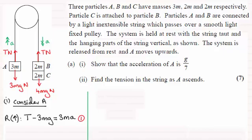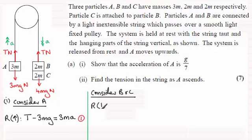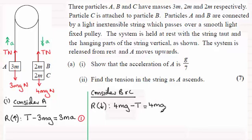Now we look at these two particles. Consider B and C. Because they're moving downwards, we apply Newton's equation of motion resolving downwards: force equals mass times acceleration. The force acting downwards is 4mg, then we subtract the tension which acts in the opposite sense, minus T. That equals the mass, 4m, times the acceleration a. I'll call this equation number two.